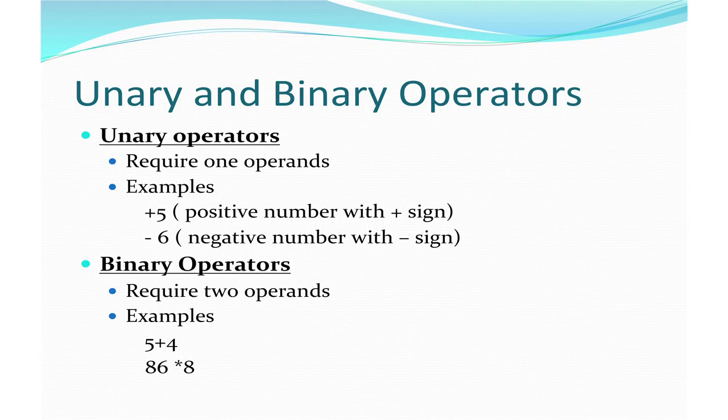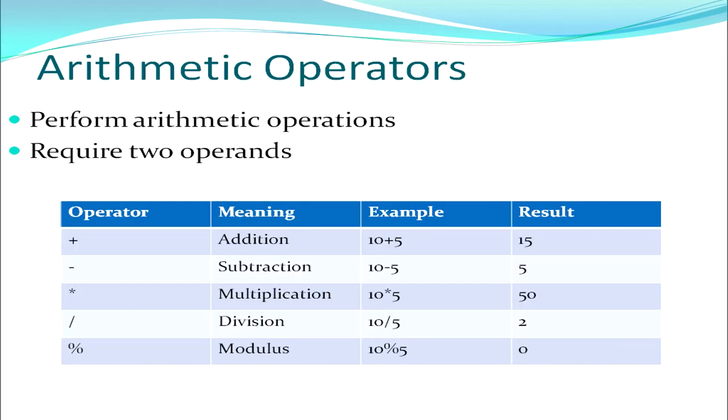A binary operator on the other hand requires two operands. For example, if I want to add two numbers I require two numbers — without two numbers I cannot do the addition operation. So plus is a binary operator. Similarly, other arithmetic operators are also binary operators.